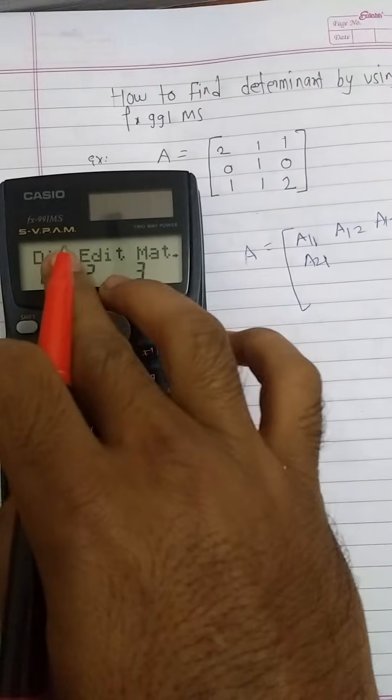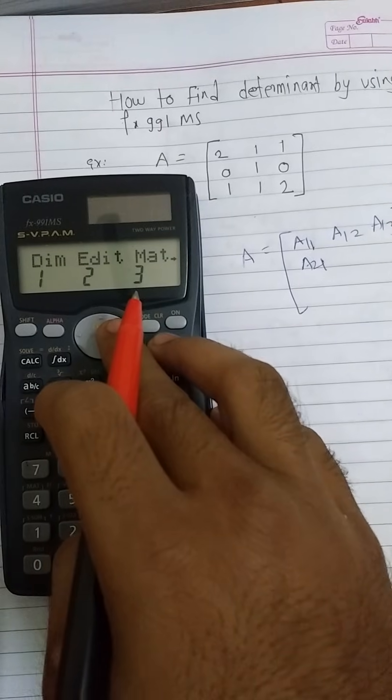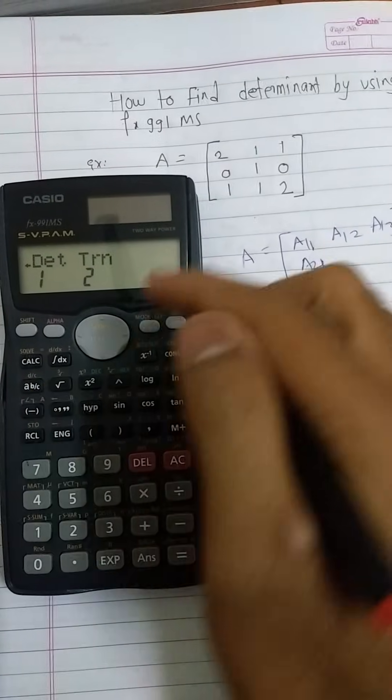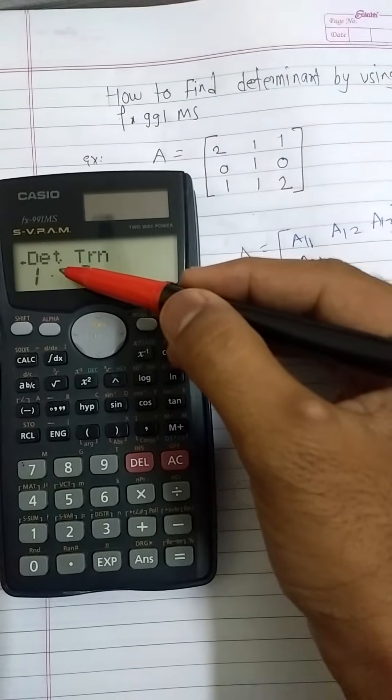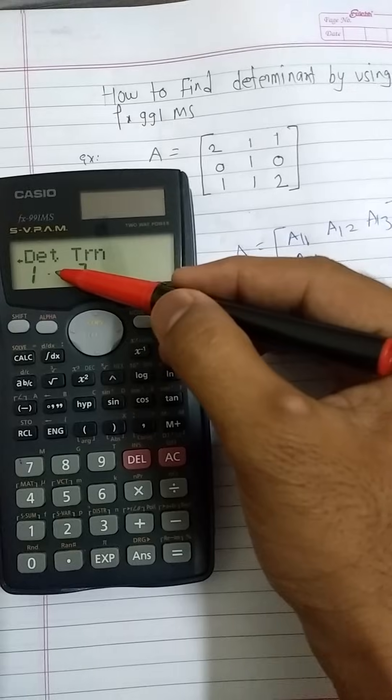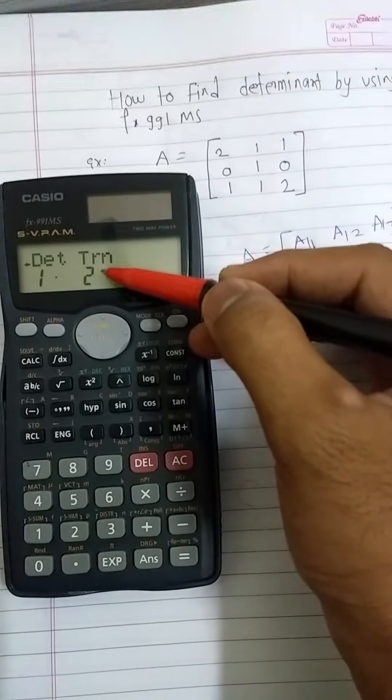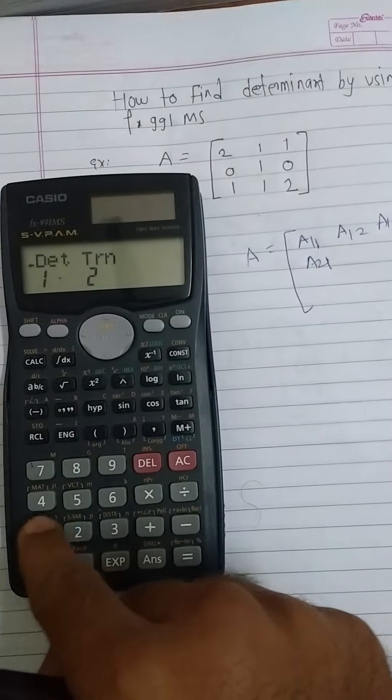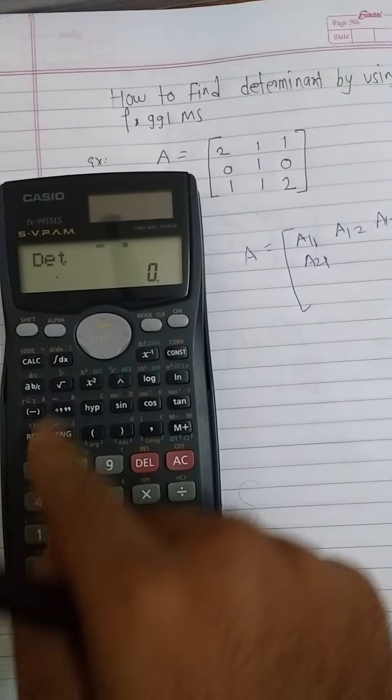Then we will see 3 options. Scroll on right using this button, then we will see determinant and transpose. Our interest is to find out the determinant of the matrix, therefore press 1. To find out the transpose of the matrix press 2. Here I am pressing 1 button to find out the determinant of matrix A.